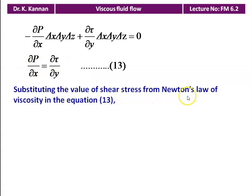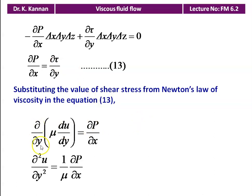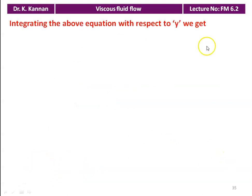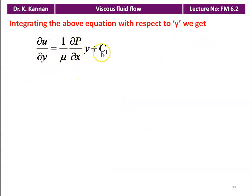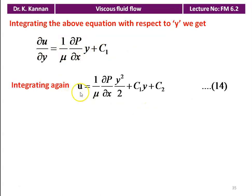Substituting shear stress from Newton's law of viscosity — τ = μ·∂u/∂y — we get: μ·∂²u/∂y² = ∂P/∂x, or equivalently ∂²u/∂y² = (1/μ)·∂P/∂x. Integrating once with respect to y gives ∂u/∂y = (1/μ)·∂P/∂x·y + C₁. Integrating again gives u = (1/μ)·∂P/∂x·y²/2 + C₁y + C₂.